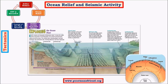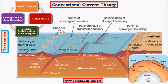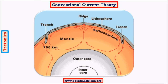Let us understand convection current theory. It explains the movement of oceanic as well as continental plates, but from the perspective of sea floor spreading we'll look only at the movement of oceanic plates. Earth is made up of different concentric layers with varying physical and chemical properties. The outer layer is the crust, below that is the mantle, then outer core, then inner core. The crust is about 30 to 100 kilometers thick, the mantle extends from about 100 to 2,900 kilometers, and the core continues to about 6,300 kilometers.